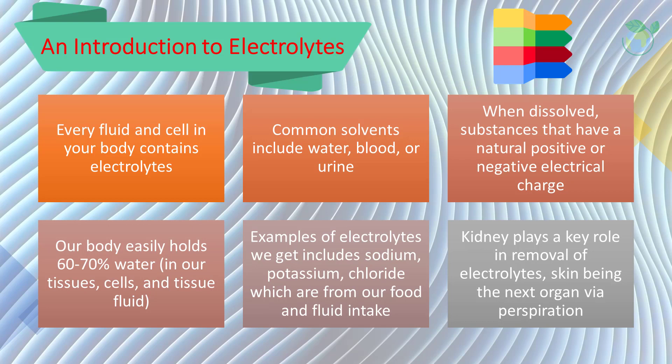Electrolytes, when dissolved, will display electrical charges depending on the species. For instance, sodium ions have a 1+ positive charge, whilst chloride exhibits a 1− negative charge. The kidney removes electrolytes via the urine and serves as the main removal means. Alternatively, perspiration through the skin also contributes to removal of electrolytes, especially during high metabolic activities.